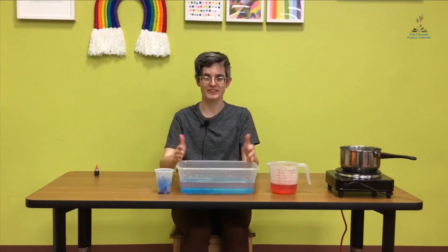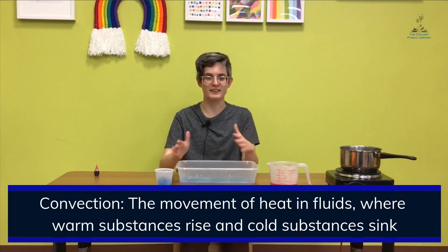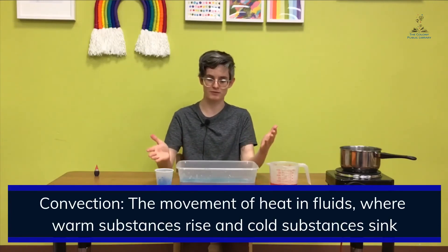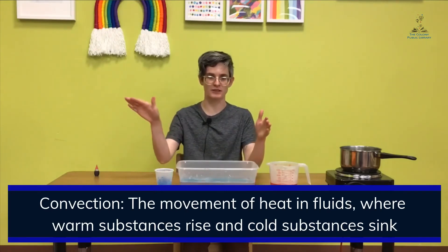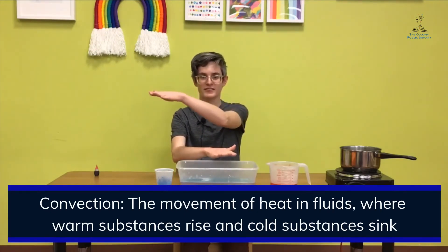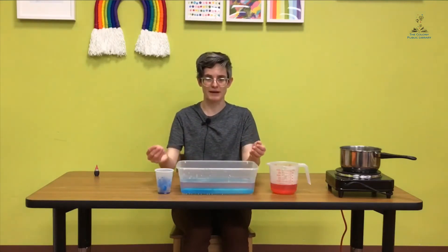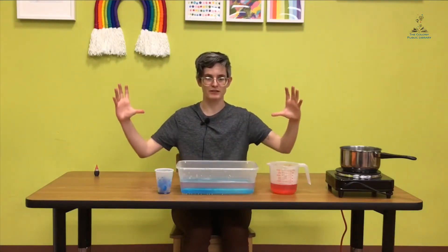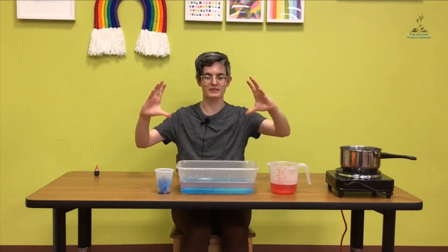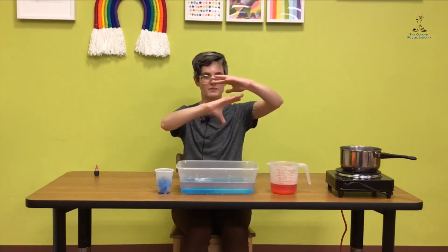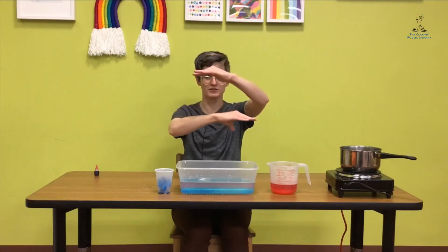This is called convection. Convection is how heat interacts in a fluid. So remember that word fluid. In water and in air, that is how heat would behave, where the cold air stays on the bottom, the warm air stays on top. And in meteorology, we use the terms cold air mass and warm air mass. So when those cold and warm air masses meet, the cold pushes against the warm and pushes it to the top, and the cold stays on the bottom.